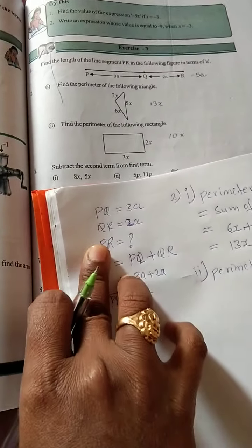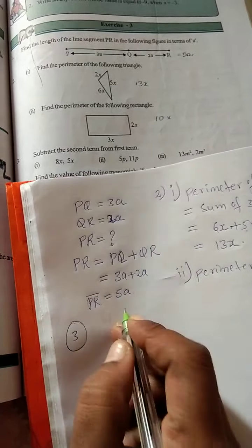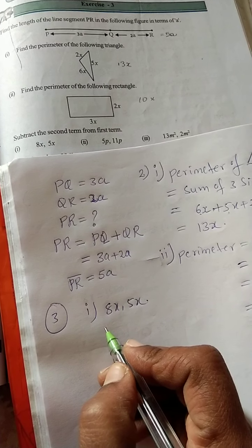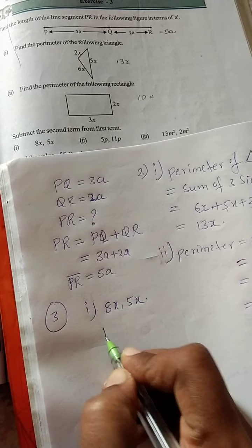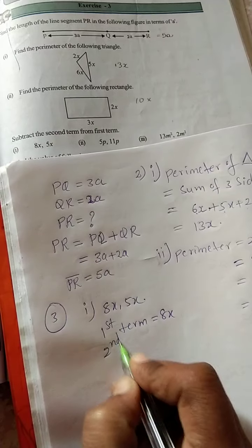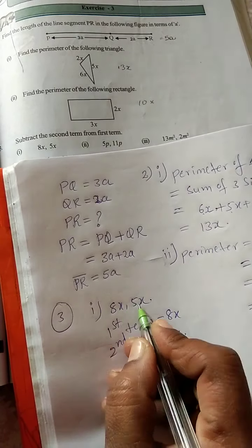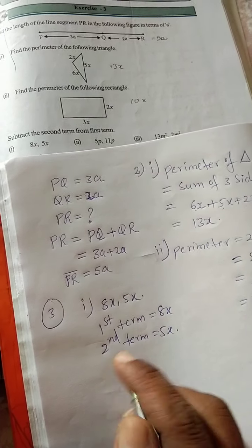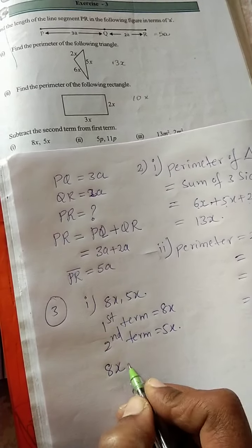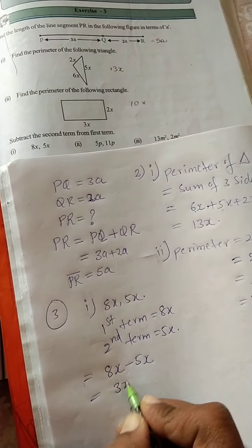Third question: subtract the second term from the first term. First bit: 8x comma 5x. The first term is 8x and the second term is 5x. We subtract the second term from the first term: 8x minus 5x equals 3x. 3x is the answer.